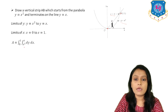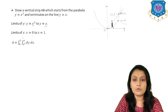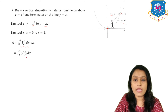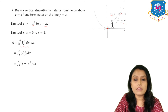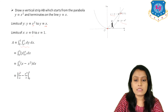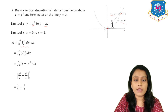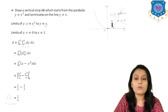The area is given by double integration: integration from 0 to 1 in X and X² to X in Y, of dY dX. Integrating with respect to Y first: integral of 1 dY = Y, evaluated from X² to X, gives (X − X²). Integrating with respect to X: integration of X is X²/2 and integration of X² is X³/3, with limits 0 to 1. Substituting the limits gives 1/2 − 1/3 = 1/6. So the area is 1/6.